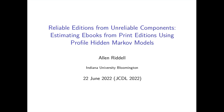The method uses a profile hidden Markov model, a 1990s-era model from computational biology originally designed to align sequences of closely related amino acids and RNAs. The profile HMM produces an e-book by combining information found in different print editions. Character sequences that occur in several print editions tend to be found in the e-book version, while characters that appear in only one or two print editions tend to be print artifacts or transcription errors.